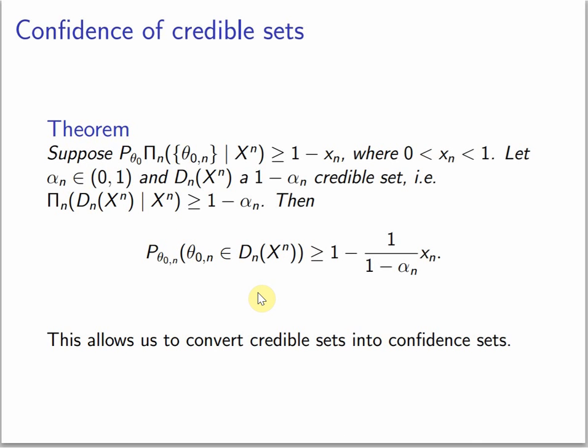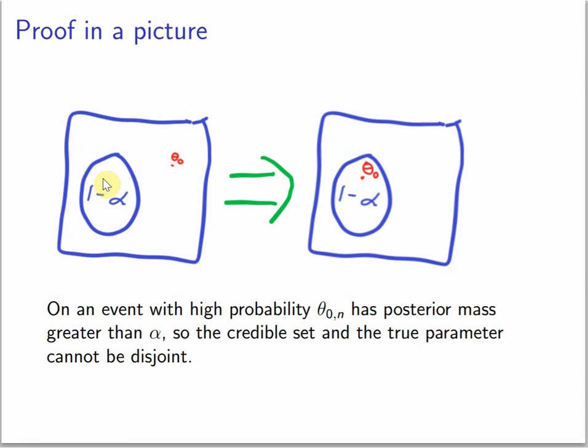What is the outline of the proof? You have the parameter set and you have the credible set, which has posterior mass at least one minus alpha. Because the posterior concentrates in the true parameter, then with an event of high probability this has more than alpha posterior mass, which means that the true parameter is in the credible set because the posterior mass of the whole parameter set is one. So if this is more than alpha, it must be in this set because otherwise there must be more than one.